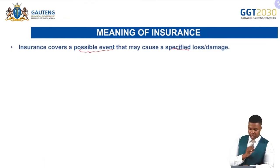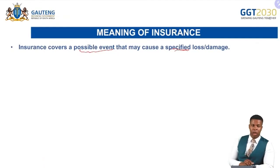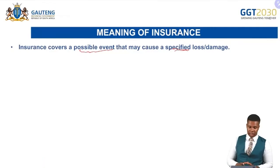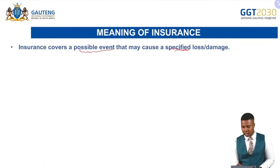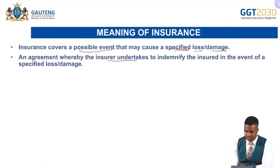Insurance covers a possible event that may cause a specified loss, meaning you specify which losses you want to be covered for. The insurance company then covers you for those specified losses. For example, when looking into car insurance, a car owner would specify: can I be insured for theft, hijacking, or a possible car accident? Those are events that can lead to loss or damage of the car. It is an agreement whereby the insurer undertakes to indemnify the insured in an event of a specified loss or damage.